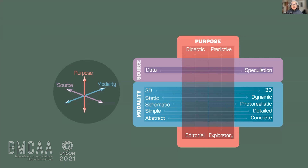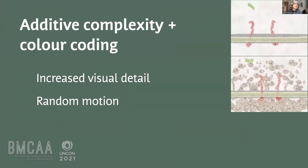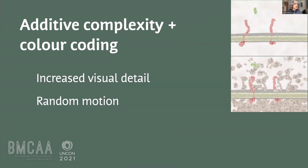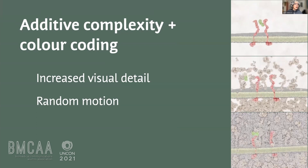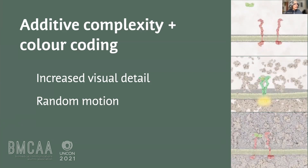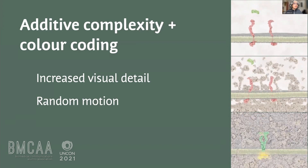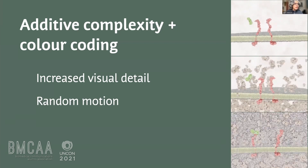The Science Visualization Lab has been looking at how we use and design visuals over the past eight years, including increased visual detail and, in biology education, the introduction of random motion. An early experiment looked at additive layering of details and complexity to determine whether viewers could understand a highly complex animation. The basic takeaway is yes, they can — however, when you use selective color coding, those elements are assigned to the background by students, and that's a problem.